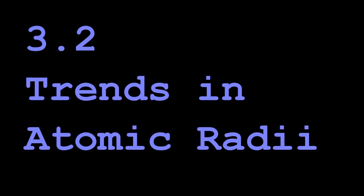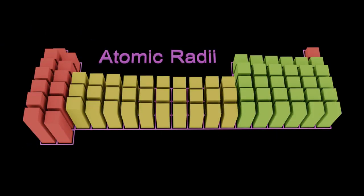3.2 trends in atomic radii. Well there's the periodic table and you can see there seems to be some patterns but there's some discontinuities too, but there's only two patterns that you need to know.